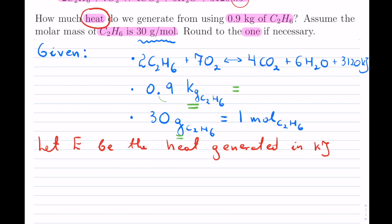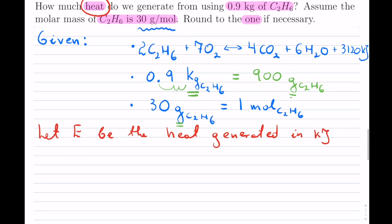so I'm going to change that prefix to just be in grams so that I have consistency there. So kilo, so this would move over three spots. One, two, and three. So this is 900 actually grams of C2H6.